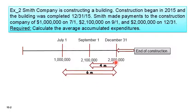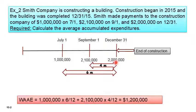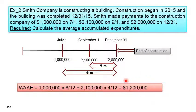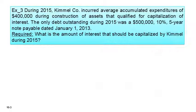We calculate the weighted average accumulated expenditure as follows: 1 million times 6/12, plus 2,100,000 times 4/12, and December is zero. The total weighted average accumulated expenditure is 1,200,000.